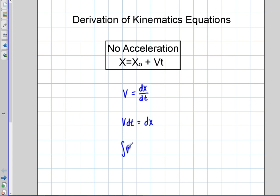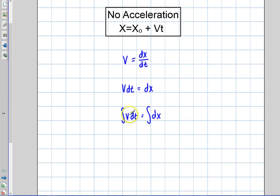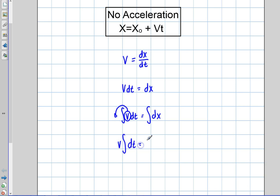I'm going to take the integral of velocity times dt equals the integral of dx. The next question I need to ask myself is, what am I going to do with this velocity? Is this a function that needs to stay in the integral, or is it going to come out? Well, in this particular case there's no acceleration, so this velocity is a constant, and I'm going to bring it out. So I'm going to rewrite this with the velocity out front times the integral of dt, and that's going to equal the integral with respect to dx.